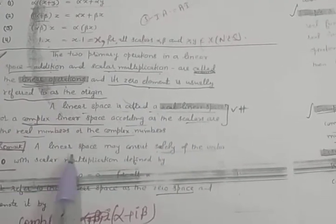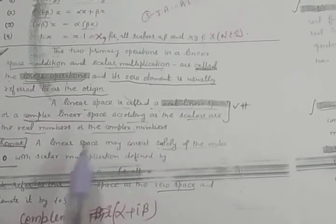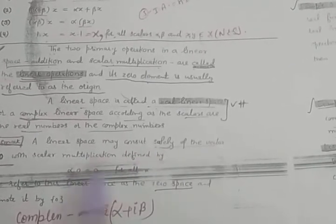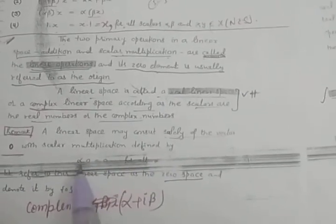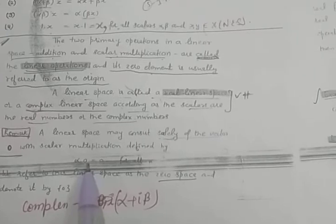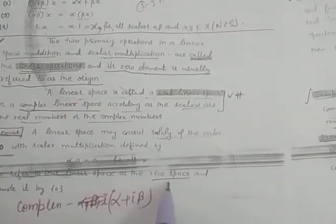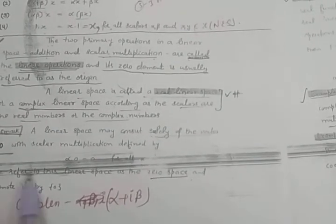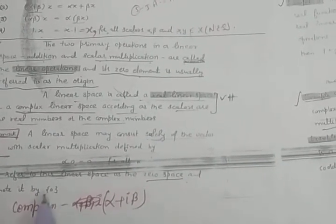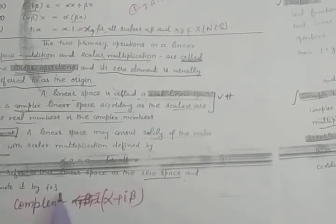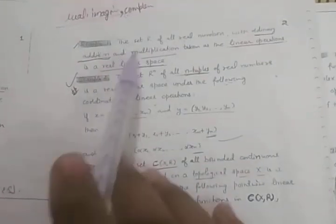Remark: A linear space may consist solely of the zero vector, with scalar multiplication defined as alpha·X = 0 for all alpha. We refer to this as the zero space, defined as the set containing only the zero vector: {0}.